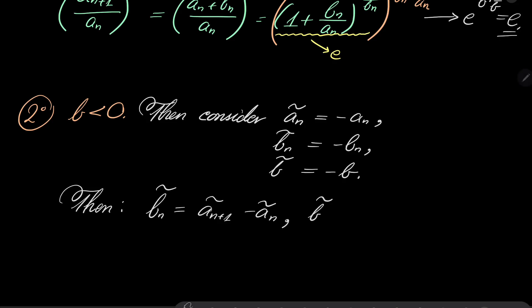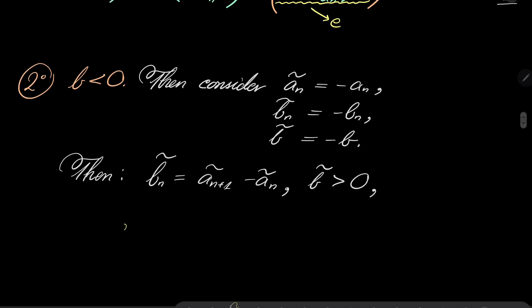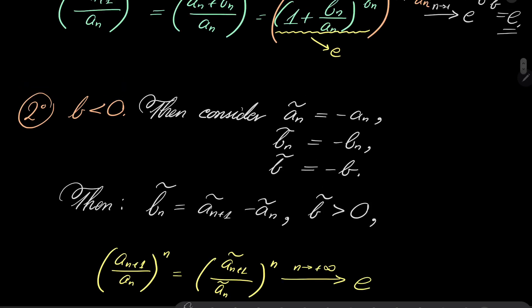Notice that then b_n tilde is a_{n+1} tilde minus a_n tilde. So it's difference of these terms. For obvious reasons, I'm just taking minus on both sides. Well, b tilde is this time greater than 0. And crucially, notice that (a_{n+1} / a_n)^n. Well, I can put minus here and here. And I have (a_{n+1} tilde / a_n tilde)^n. And by the result of case number 1, I know that this converges to e. In both cases, the limit is the same. In both cases, our limit is just e.